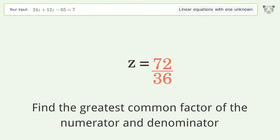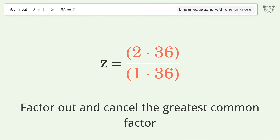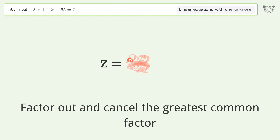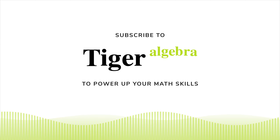Find the greatest common factor of the numerator and denominator. Factor out and cancel the greatest common factor. So the final result is z equals 2.